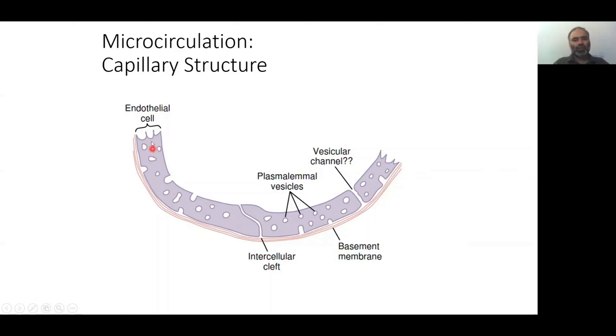Look at the basic structure of the endothelial cell. This is the basement membrane, the red lines, and on top of this sits the endothelial cell. This is one endothelial cell, the second one, and then you have the third one.